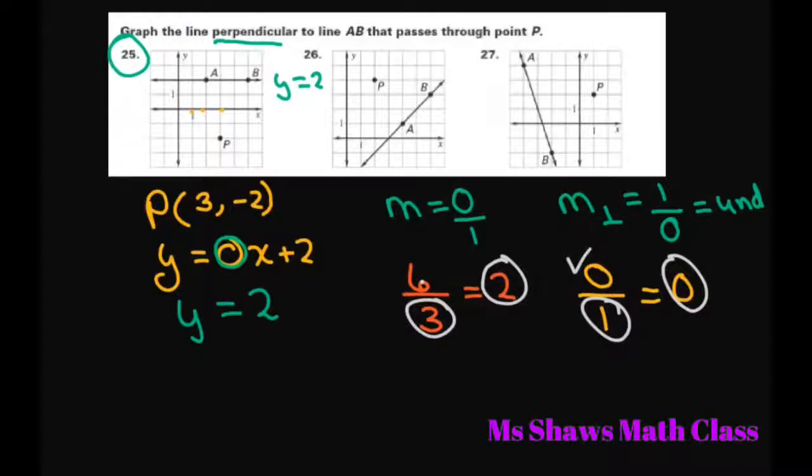However, when you have 1 divided by 0, there is nothing, I'll just put a box here, that we can put in there when you multiply this by 0 that will give you 1. That's why it's called undefined.